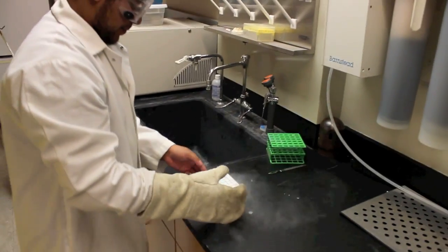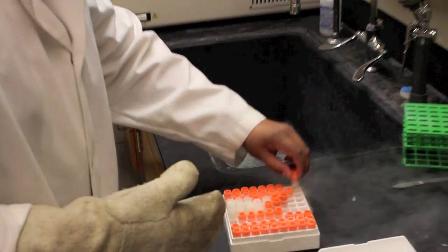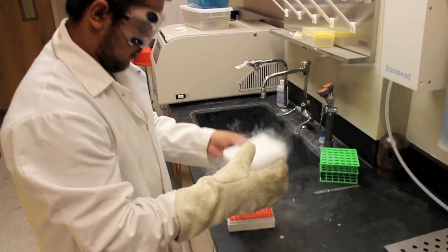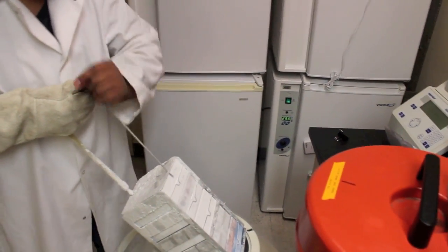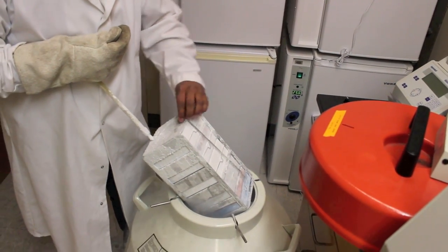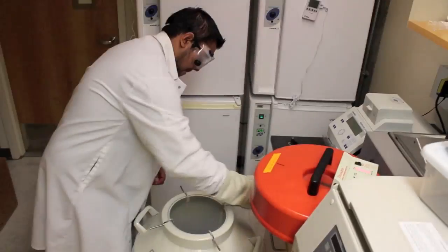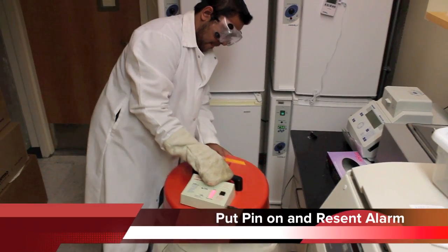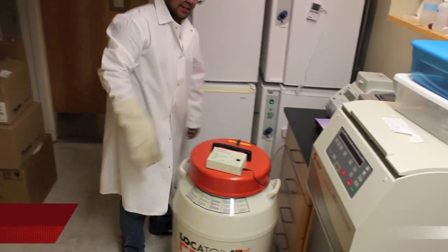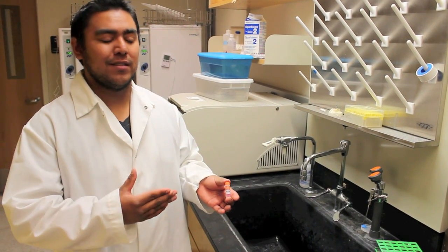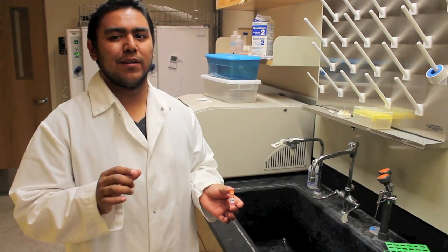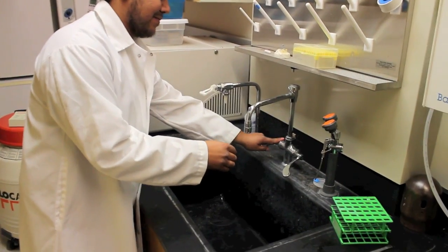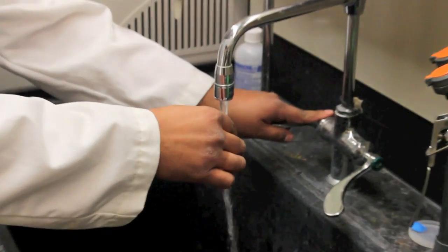And here are our cells. The next step in resuscitating our cells is we are going to thaw them out very quickly. We usually do this in a 37 Celsius water bath, but for right now we will use a sink. This is to prevent crystals from forming within the media that will cut the cells open and damage our cells. We will keep them under here for about one to two minutes.